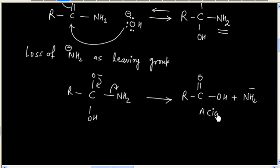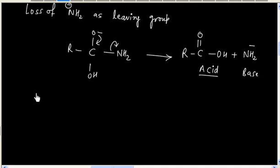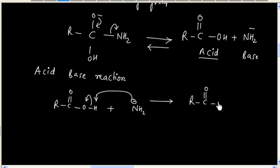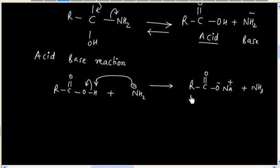Now we have acid and we have base, so the next step is an acid-base reaction. This step is also reversible. We have acid and NH2- as base. It will take a proton and this bond goes here. So we will have RCOO- and ammonia. Since the solution contains Na+, we will have salt of acid.